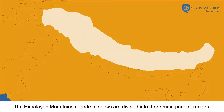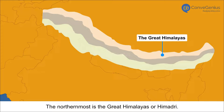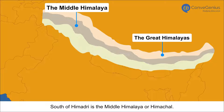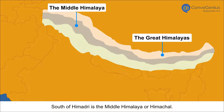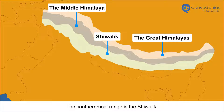The Himalayan mountains, abode of snow, are divided into three main parallel ranges. The northernmost is the Great Himalayas or Himadri. South of Himadri is the Middle Himalaya or Himachal. The southernmost range is the Shivalik.